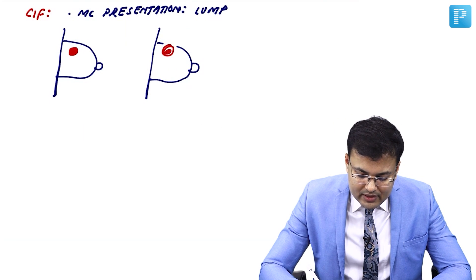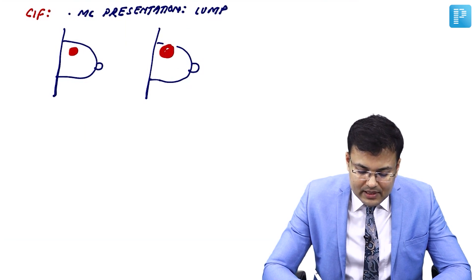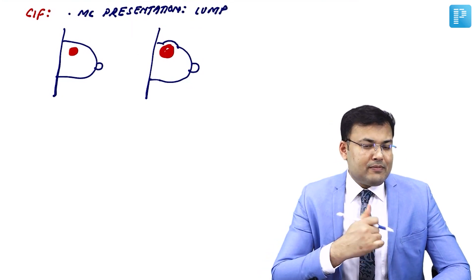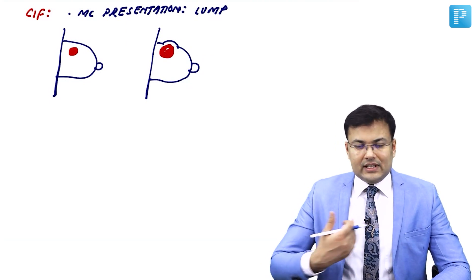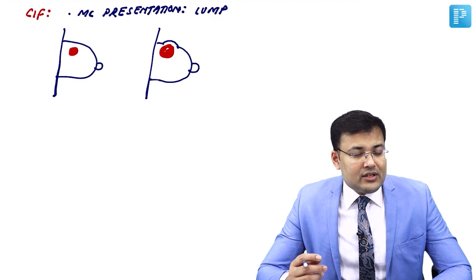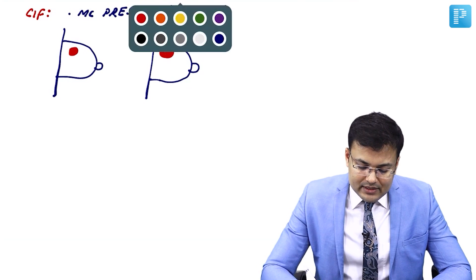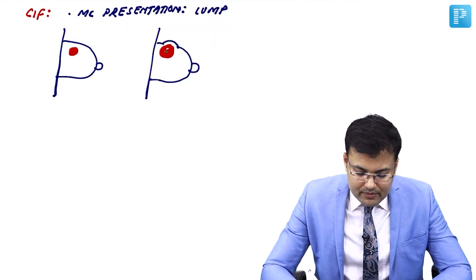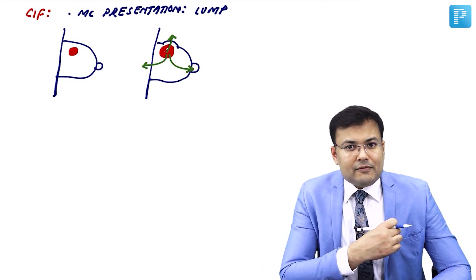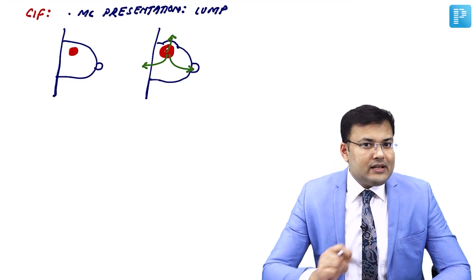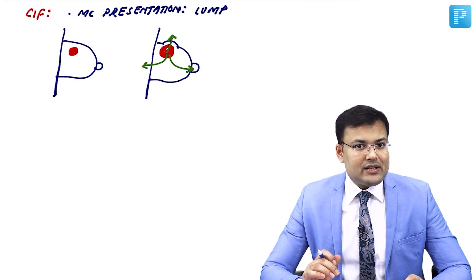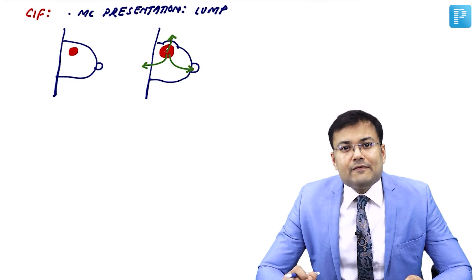Because of the increase in size of the lump, there is architectural distortion — the shape of the breast is going to change. If she sees the symmetry, the breast becomes asymmetrical. After that, this lump involves the breast skin, nipple, and chest wall. If there is involvement of breast skin, there is skin fixity. If there is involvement of the nipple, there is nipple retraction, nipple deviation, and nipple ulceration. And if it involves the chest wall, there is fixity to the chest wall.